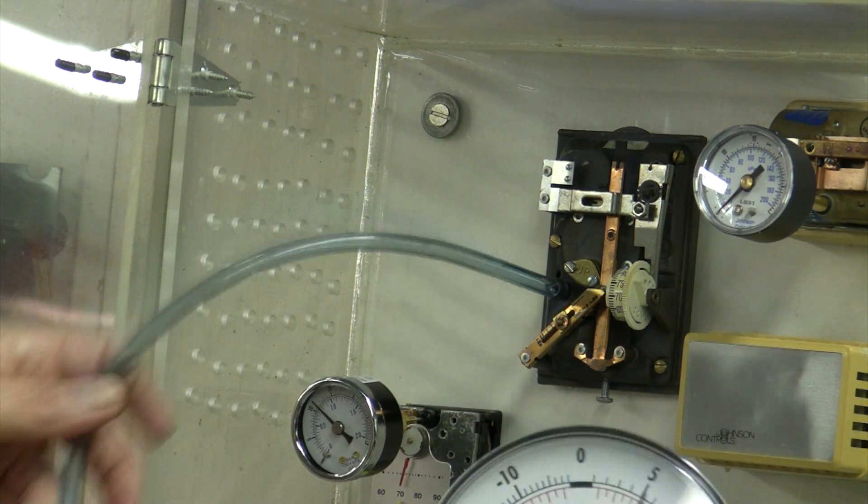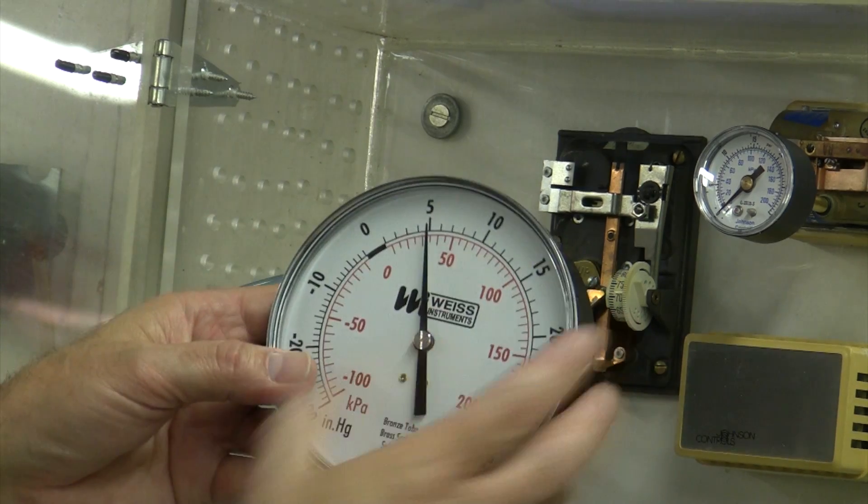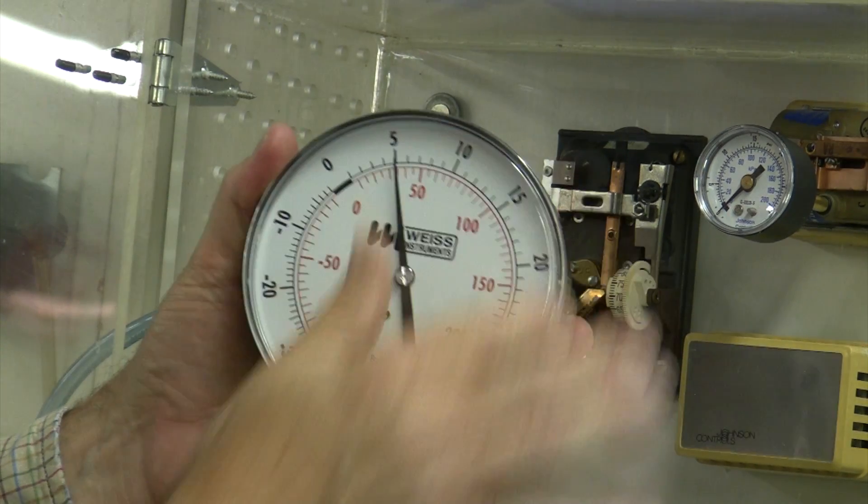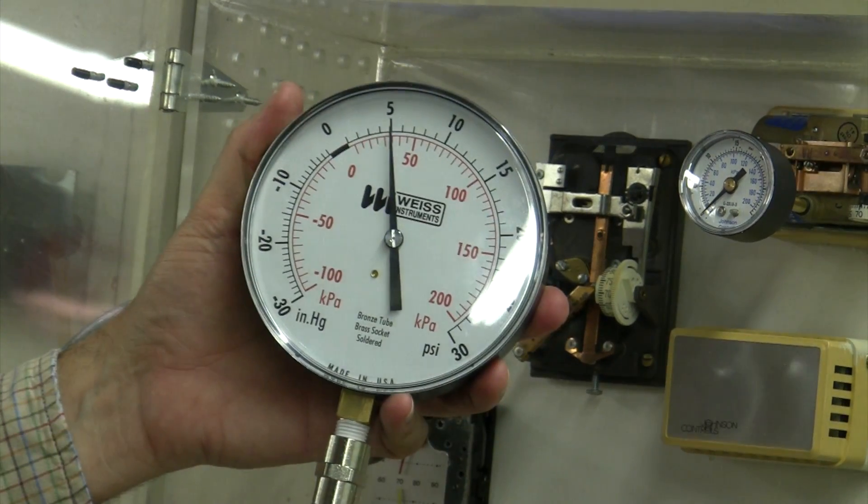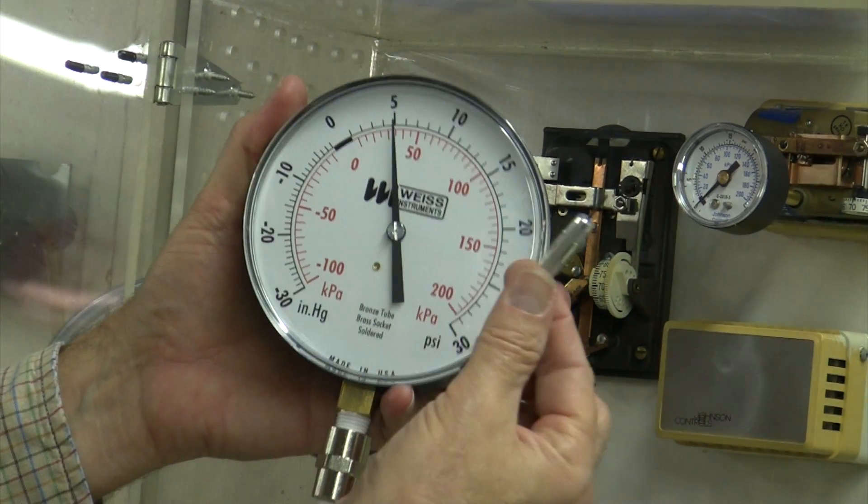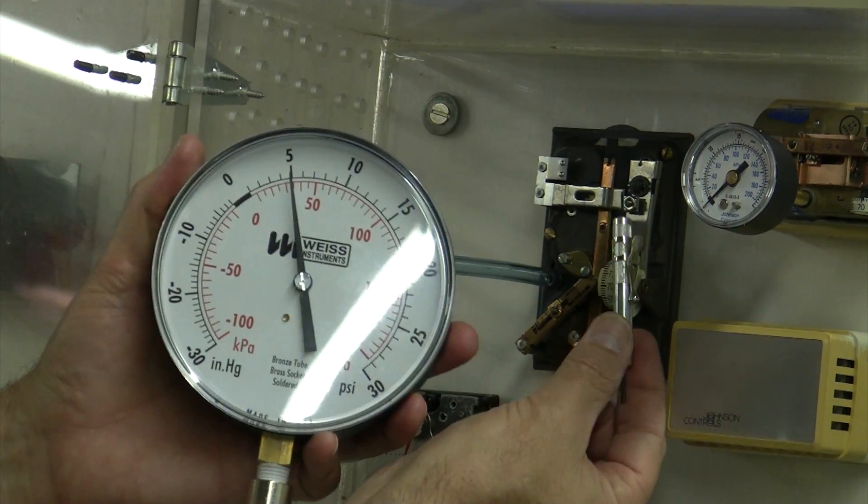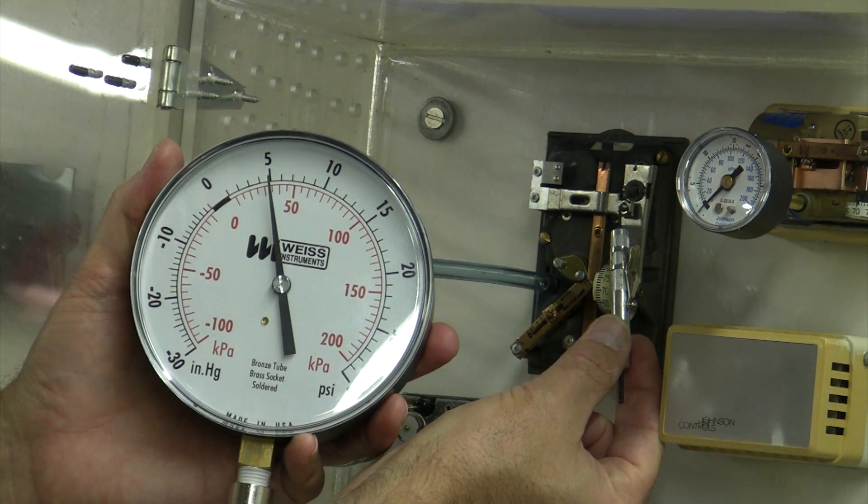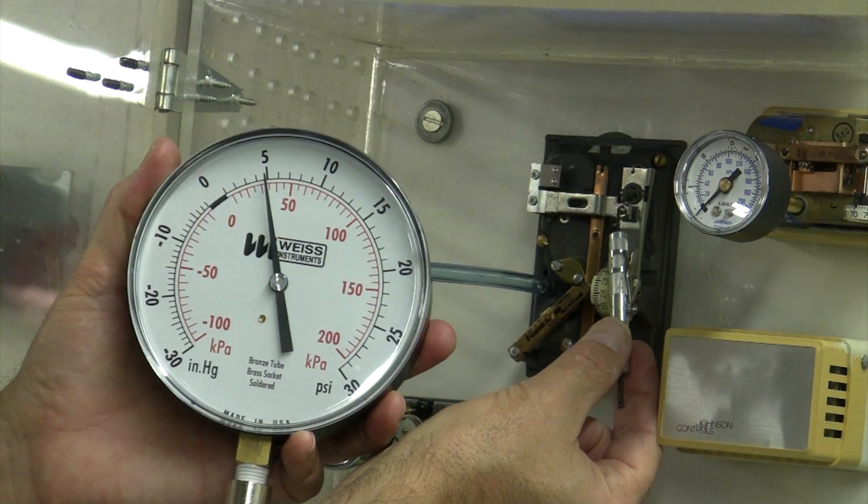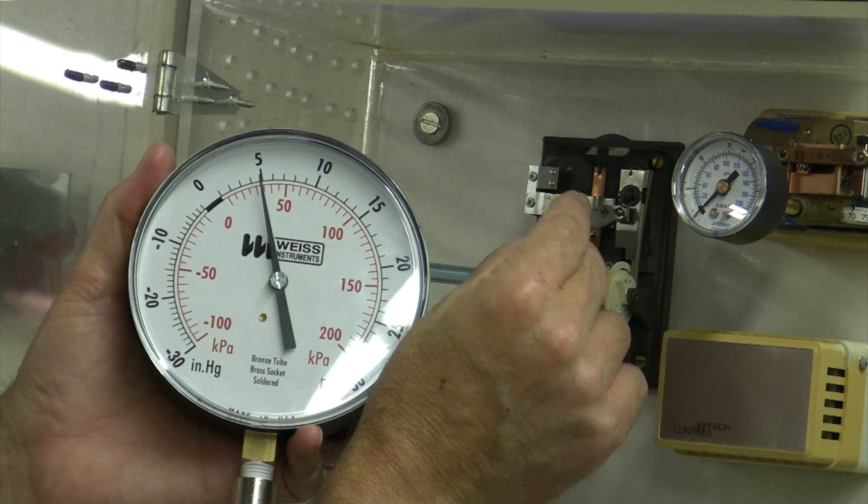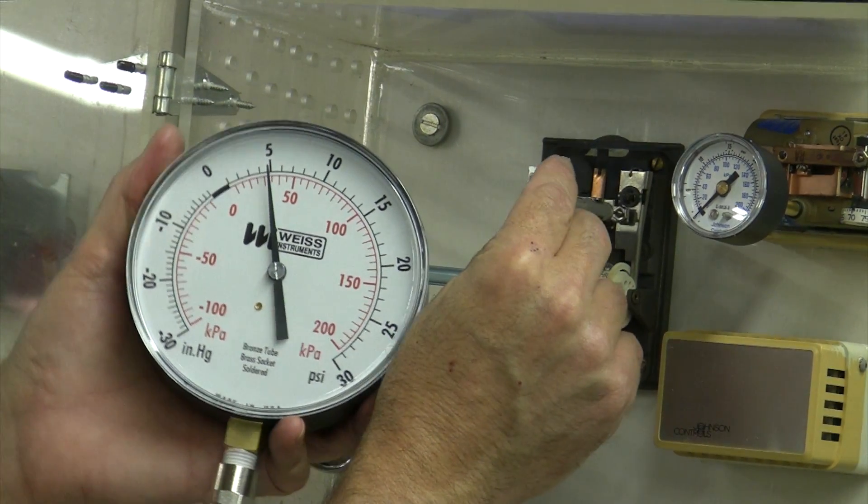I've got a large gauge here, so it's a little easier for the camera to see on this one. Now I'll take my other end of the tool and I'm going to insert it right here. This is your calibration screw. Let me insert it, it's a little tiny Allen wrench.